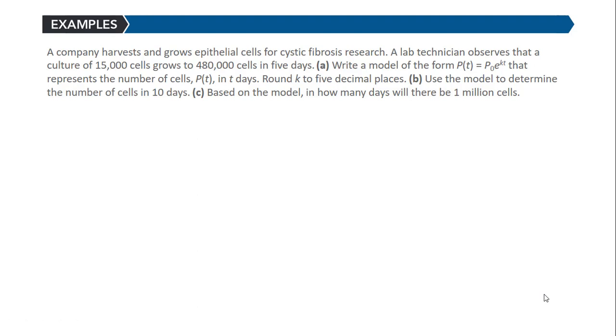A company harvests and grows epithelial cells for cystic fibrosis research. A lab tech observes that a culture of 15,000 cells grows to 480,000 cells in 5 days. We need to write a model of the form P(t) = P₀e^(kt) that represents the number of cells P(t) in t days. Round k to 5 decimal places. Then use the model to determine the number of cells in 10 days, and based on the model, how many days will there be 1 million cells.